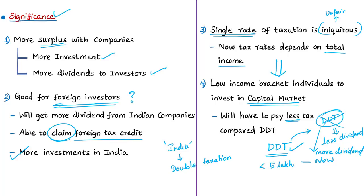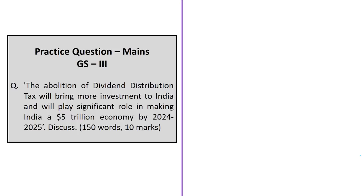The abolition of DDT is a significant step for the corporate sector, expected to boost both foreign and domestic investment in the Indian capital market. Boosting investment is the need of the hour to revive growth in the economy. That concludes the discussion on dividend distribution tax and how its abolition will boost investments in India.